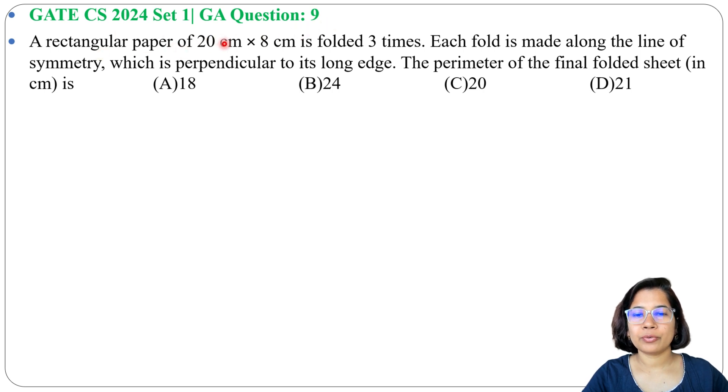A rectangular paper of 20 cm × 8 cm is folded 3 times. Each fold is made along the line of symmetry which is perpendicular to its long edge. The perimeter of the final folded sheet in cm is...